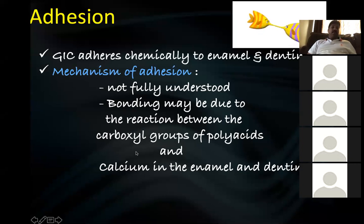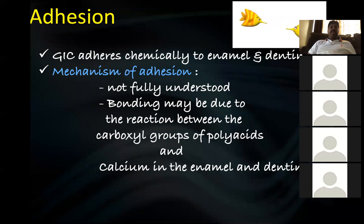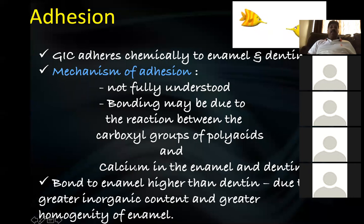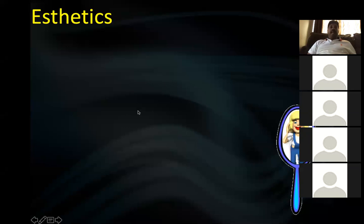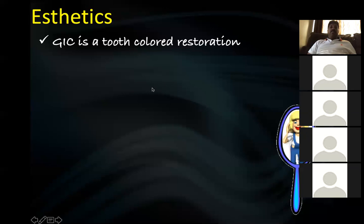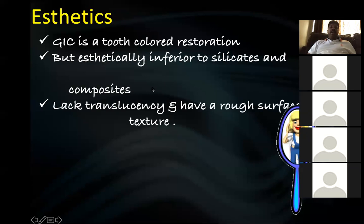Chemical bonding occurs because of the carboxyl groups of the polyacrylic acid reacting with the calcium in tooth structure. GAC is also considered an aesthetic restorative material — unlike black amalgam, GAC is white in color. However, nowadays composite resin provides better aesthetics, so GAC is mainly used in Class 5 cavities. It is tooth-colored but lacks the refractive index of natural tooth.